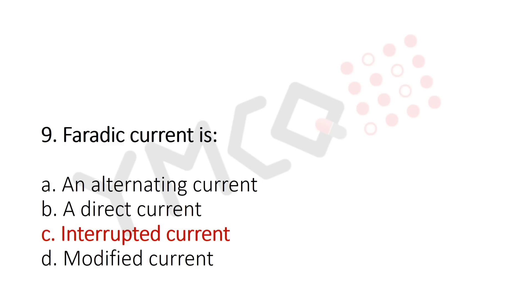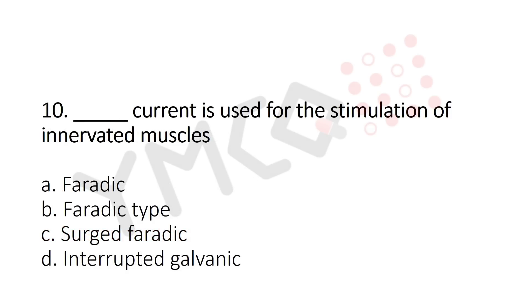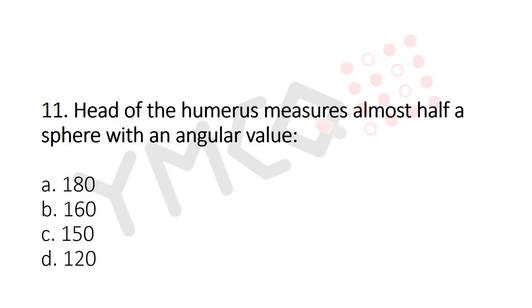Question 10: Which current is used for stimulation of innervated muscle? Option A: Faradaic current; option B: Faradaic type; option C: surged Faradaic; option D: interrupted galvanic. The answer is option A: Faradaic current.